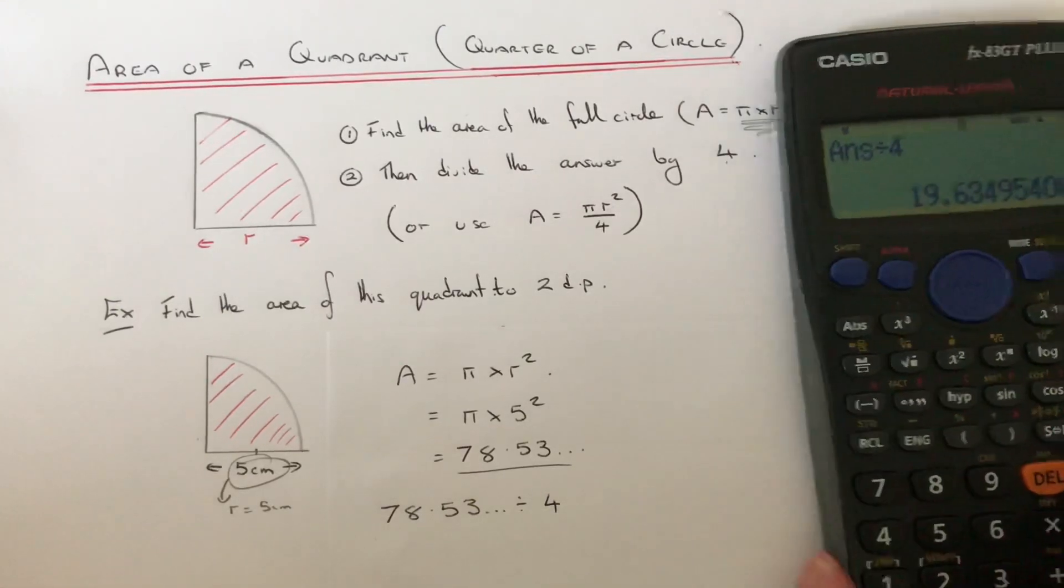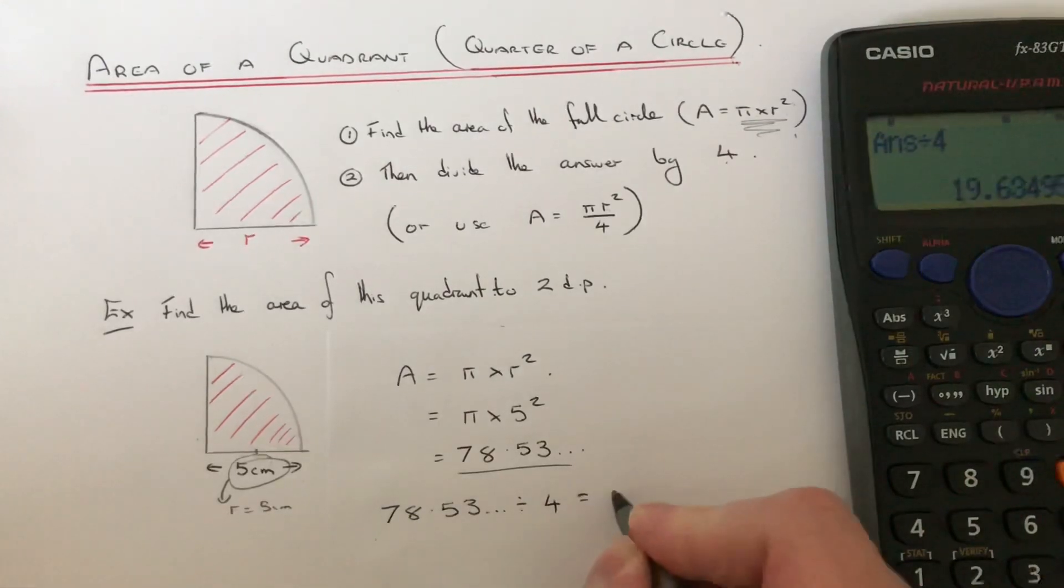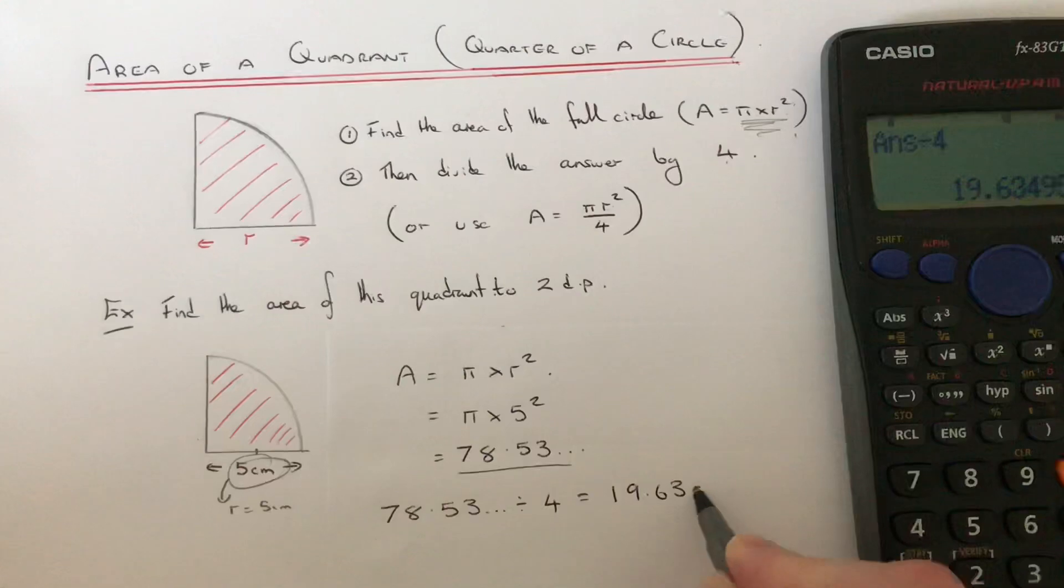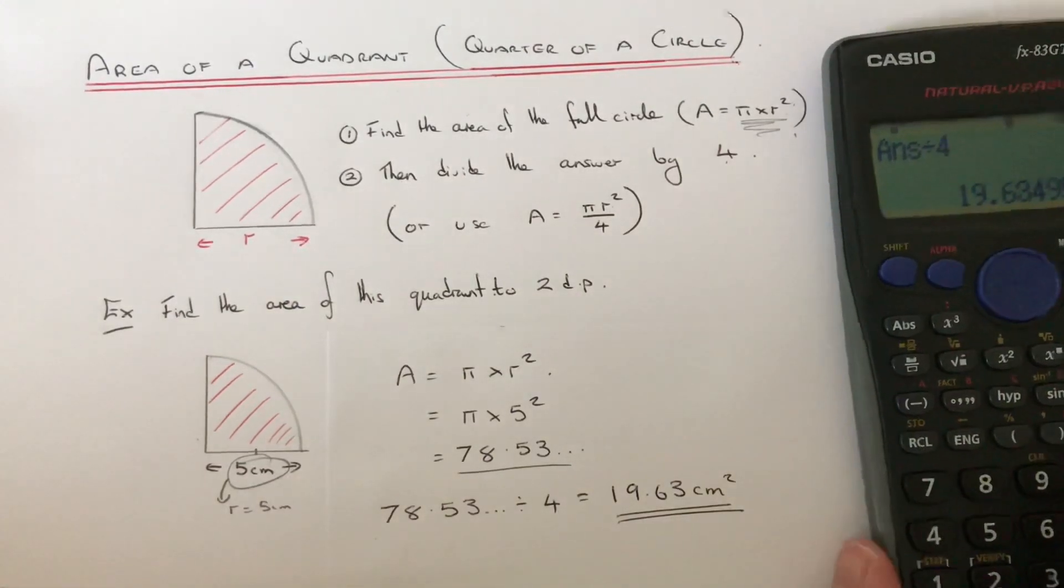That's it. So we get 19.63 centimeters squared. Okay, so that's the first way we can work it out.